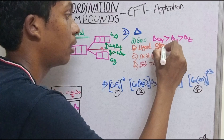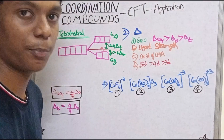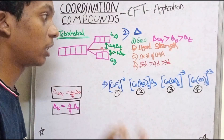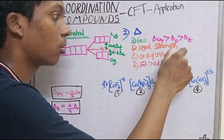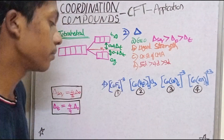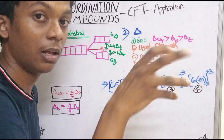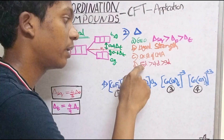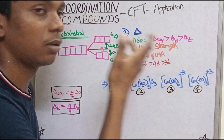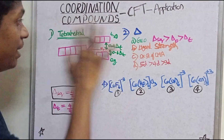The second factor affecting splitting energy is ligand strength. The third factor is the metal series — 3D, 4D, or 5D. A 5D metal has greater splitting energy than a 4D metal, and 4D is greater than 3D. Platinum is an example of a 5D or 4D metal. These three factors determine the splitting energy.